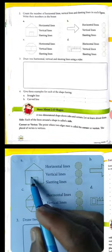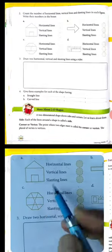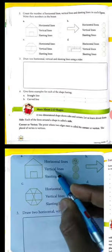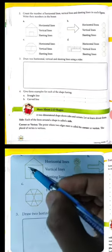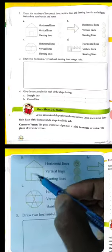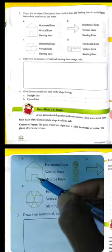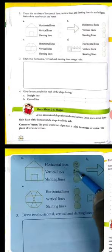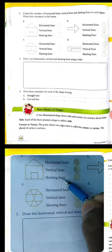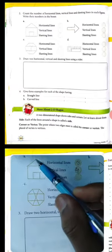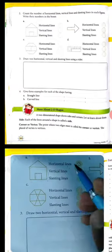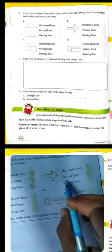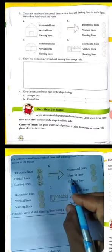Horizontal lines: 2, 3. Vertical lines: 1, 2, 3. Slanting lines: 1, 2. So this is how you can count the lines in each figure.